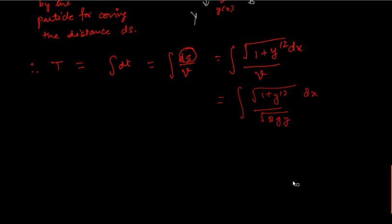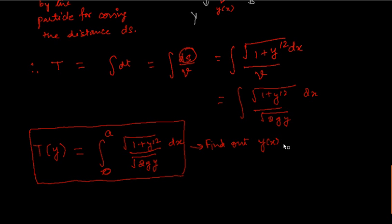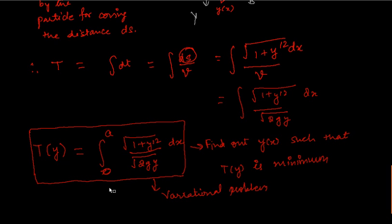Therefore, we obtain that the time is a functional of the curve y: T[y] = ∫(0 to A) √(1 + y′²) / √(2gy) dx. The problem is to find y(x) such that T[y] is minimum — this is a variational problem. The solution to this problem is a cycloid. We will learn these things in more detail. Thank you.